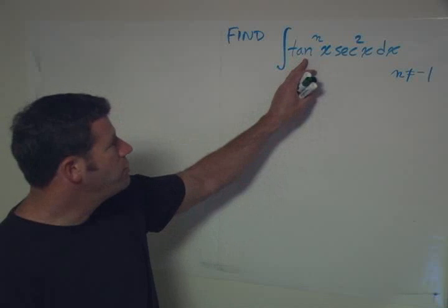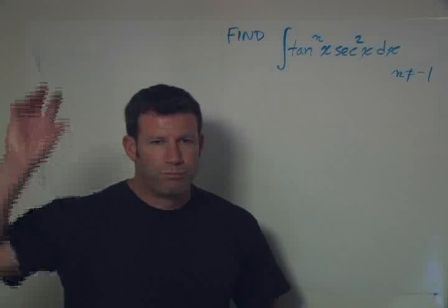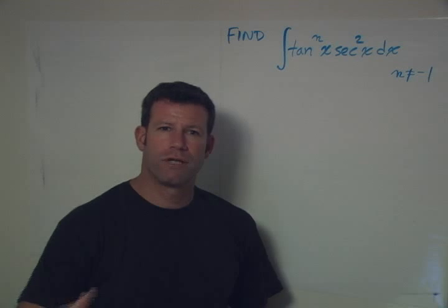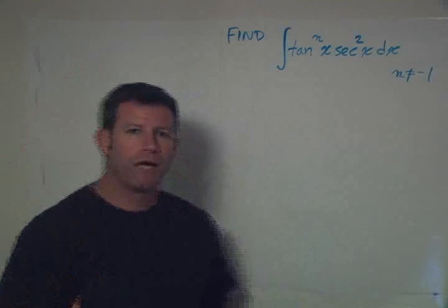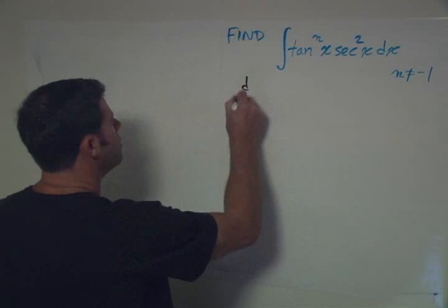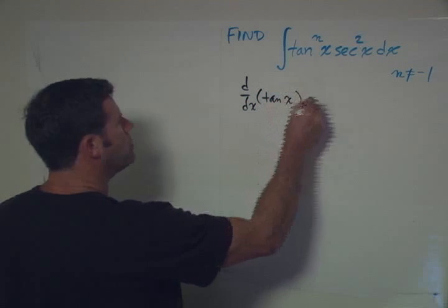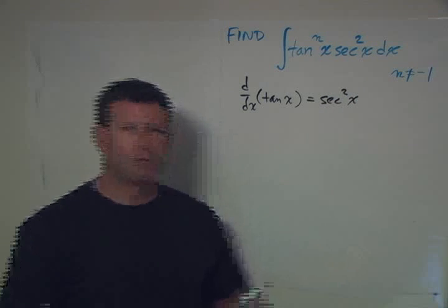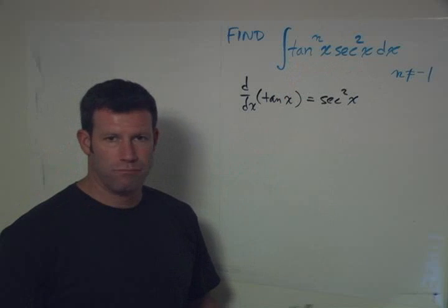And as soon as I see tangent and then secant squared, a little radar beam starts going off in your head. You have to condition yourself so that this same radar signal is going off when you see things that relate. Because we know that the derivative of tangent of x is secant squared of x. So there's some relationship there. Do you think it's coincidental that you were given a problem that has that relationship? Quite possibly.